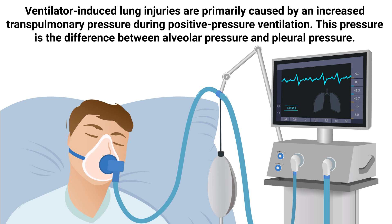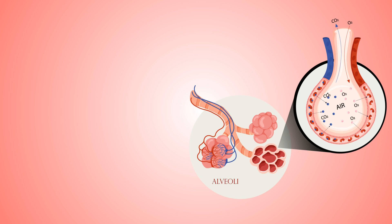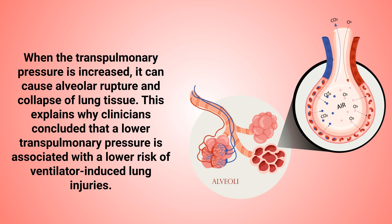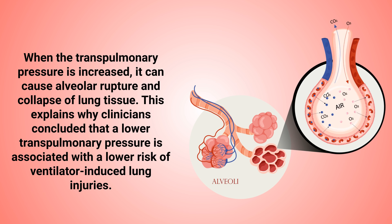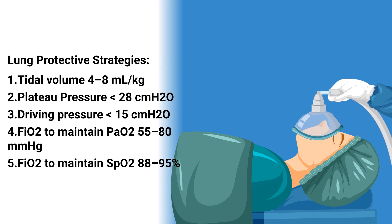Ventilator-induced lung injuries are primarily caused by an increased transpulmonary pressure during positive pressure ventilation. This pressure is the difference between alveolar pressure and pleural pressure. When the transpulmonary pressure is increased, it can cause alveolar rupture and collapse of lung tissue. This explains why clinicians concluded that a lower transpulmonary pressure is associated with a lower risk of ventilator-induced lung injuries.